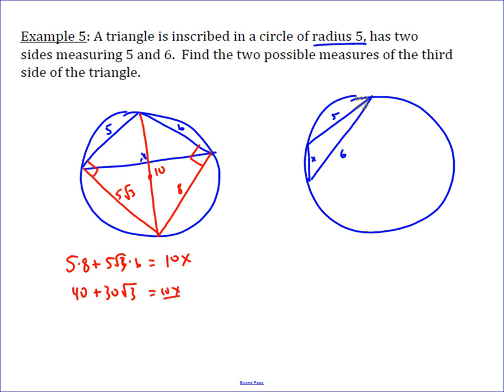Divide both by 10, and I get 4 plus 3 root 3 is the value for the third side, the x, of our triangle.